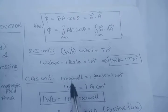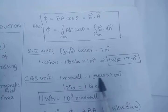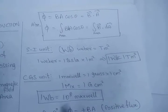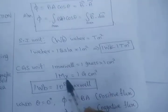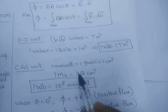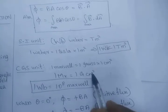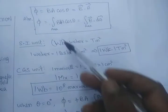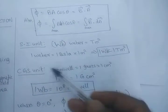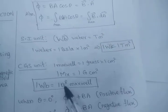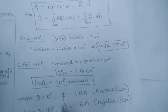So we can write: one Maxwell is equal to one Gauss centimeter squared. What is the relation between the SI unit and CGS system? One Weber is equal to 10 to the power 8 Maxwell.